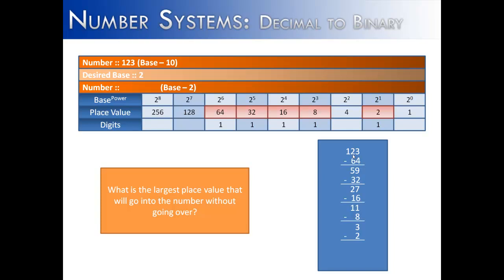We subtract 2 and place a 1 underneath the 2's position. Then we have to get rid of that remaining 1 — we put a 1 in the 1's position and get 0. The last step is any number we did not use, which would be the 4 — we put a 0 in that slot. And so 123 in base 2 is 1111011, which we get from our positional chart.